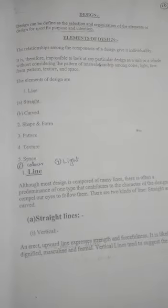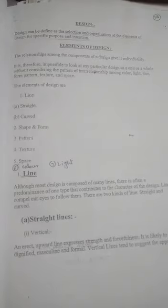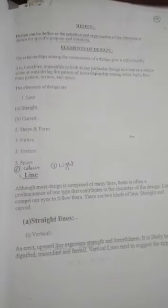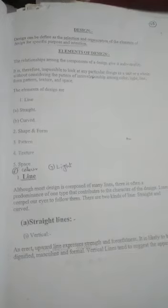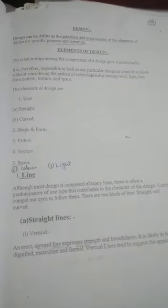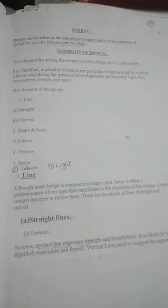texture, space, color, and light. Lines are of two types: straight lines and curved lines. These elements of design make our design structural and useful for the purpose for which the design is going to be made.